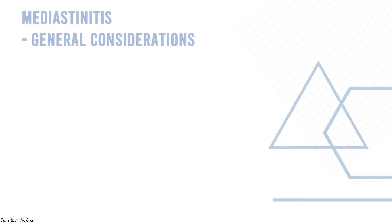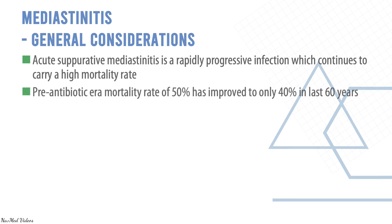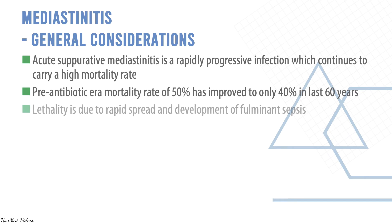Mediastinitis: acute suppurative mediastinitis is a rapidly progressive infection with a high mortality rate. Before modern antibiotics, mortality was up to 50%, and it has only come down to about 40% in the last 60 years. It must be considered a high-risk condition — it can easily be missed and the patient can die. Lethality is due to the rapid spread and development of fulminating sepsis.